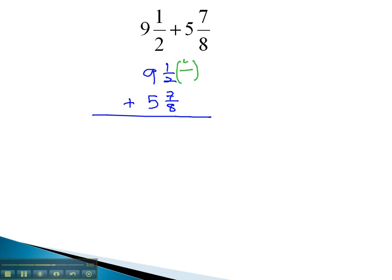So the denominator of 2 needs to be multiplied by 4 over 4, giving us 4 eighths, and we're adding that to 7 eighths. 4 plus 7 gives us a total of 11 eighths, and 9 plus 5 gives us 14.